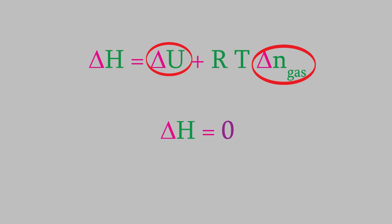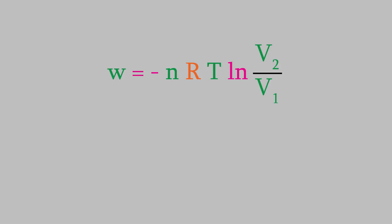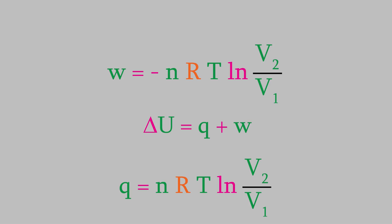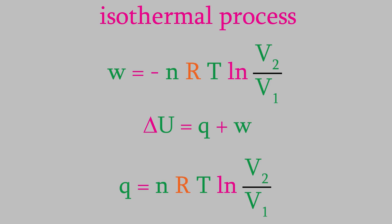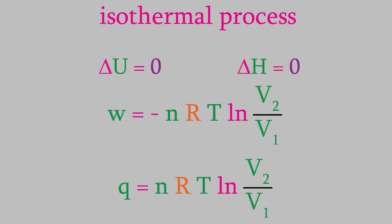Next, let's look at the work. From video 15, we saw that the work for a reversible process can be expressed using this equation, so we can calculate the work. What about the heat? We don't have an equation for the heat directly, but we have the first law of thermodynamics. Since we already know that the energy for this process is zero, the heat and work must be equal to each other but opposite in sign. So our expression for heat is just the negative of the expression we got for the work. Note that this is only true for an isothermal process — our equations for heat and work will be different for other kinds of processes.